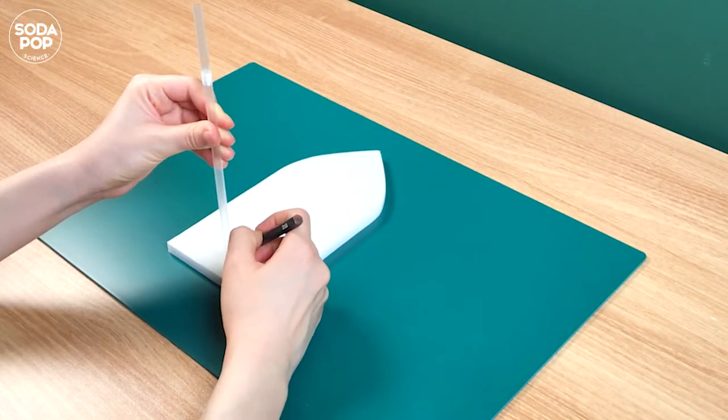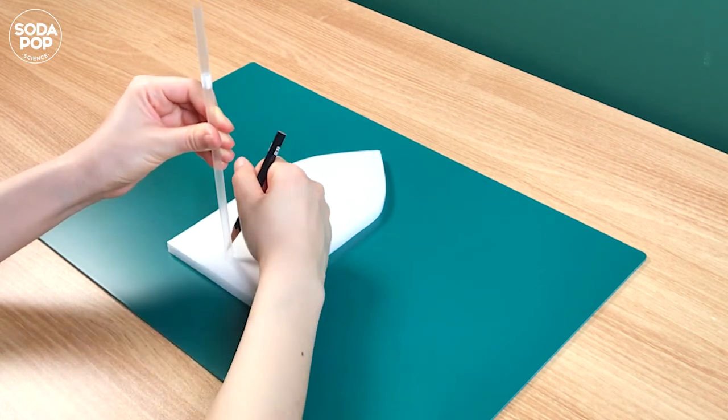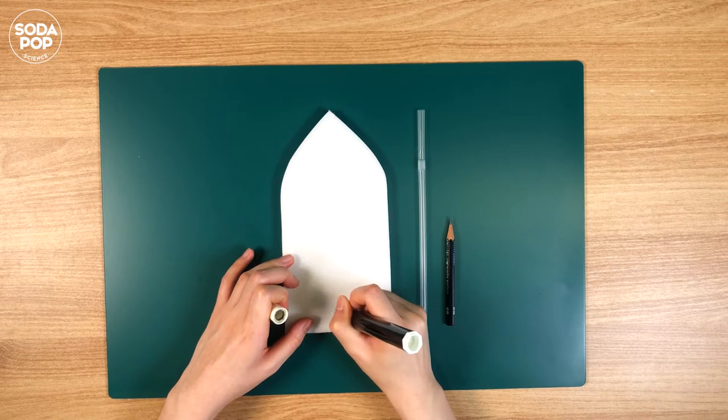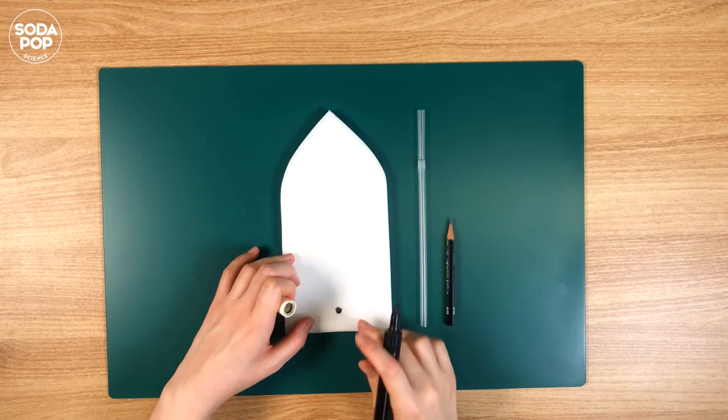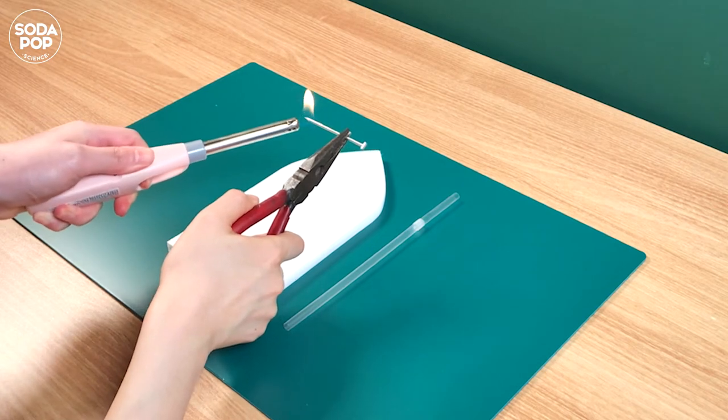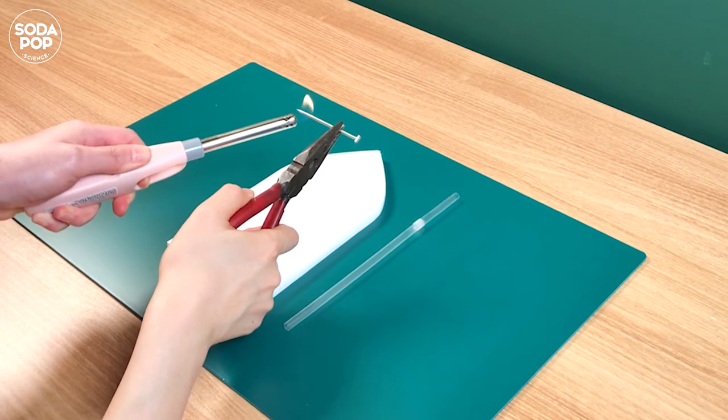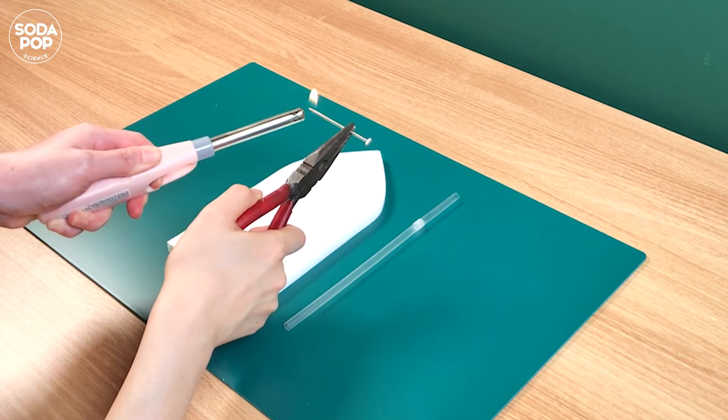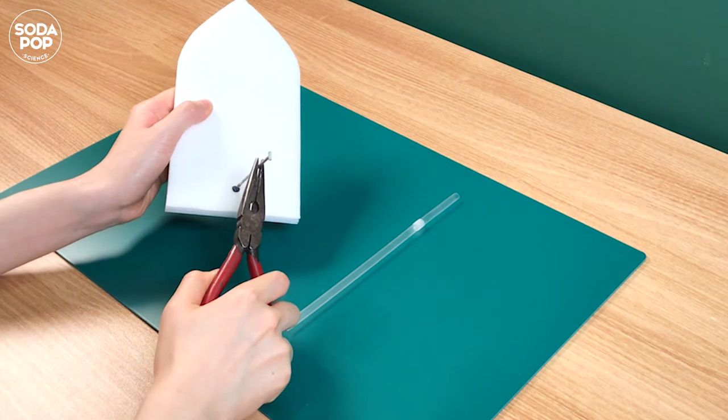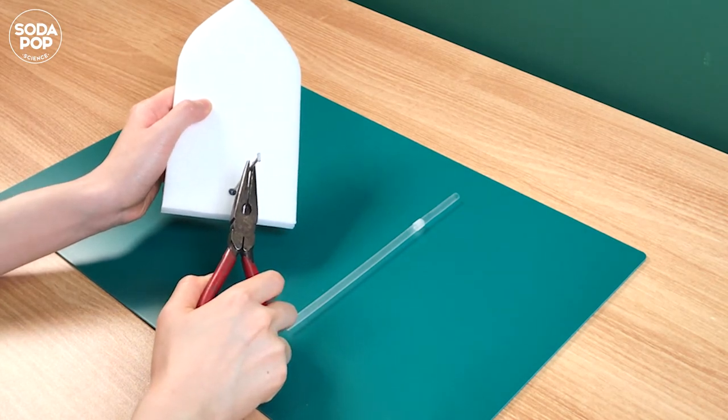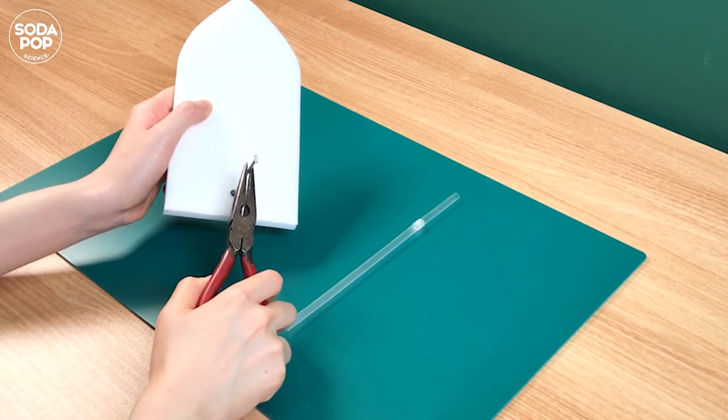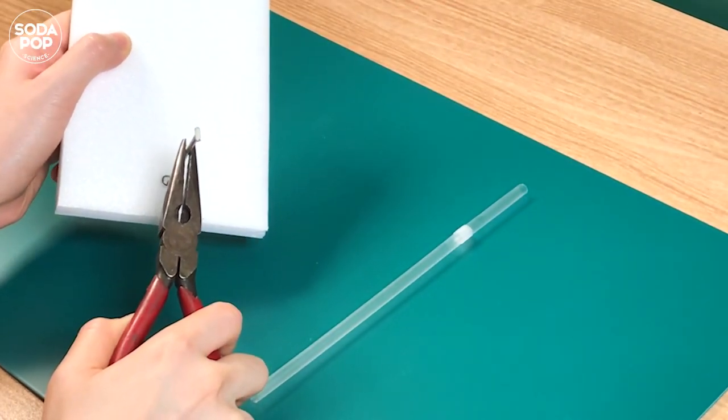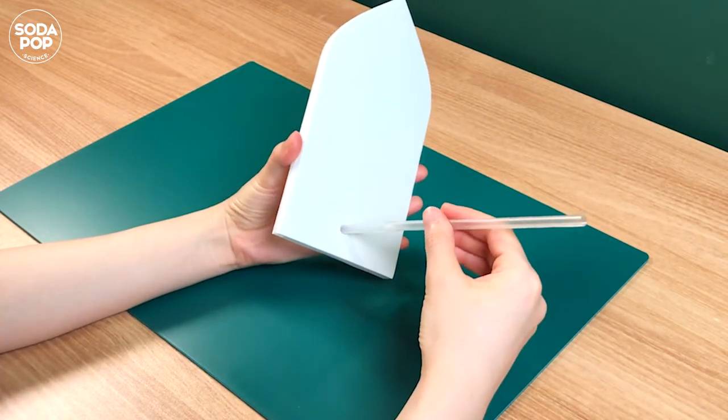Make a small hole for the straw to pass. I made a hole using the heat. Don't forget to ask an adult for help.